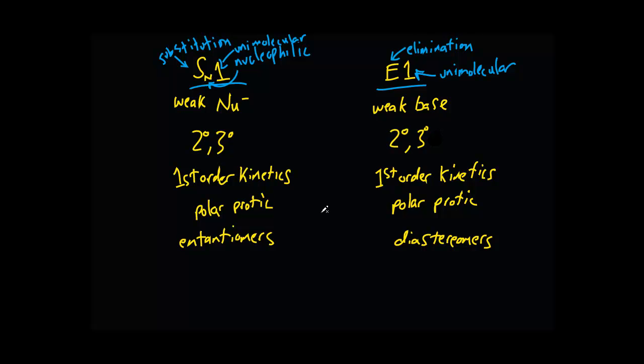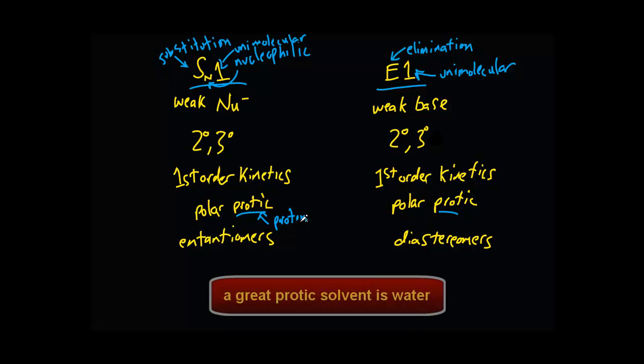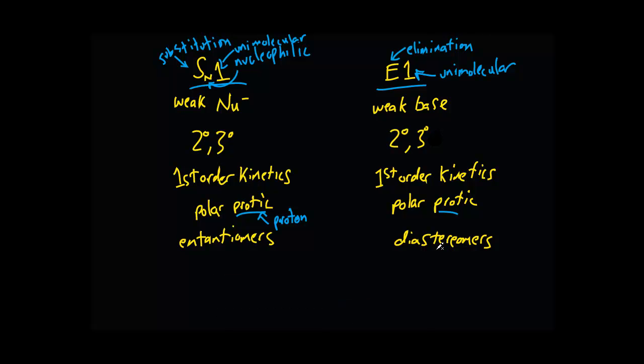They both happen in polar protic solvents. If you're not sure what that is, just look at the root of the word—you see 'proton,' which is the ability of the solvent to donate a proton. One forms enantiomers and the other forms diastereomers.